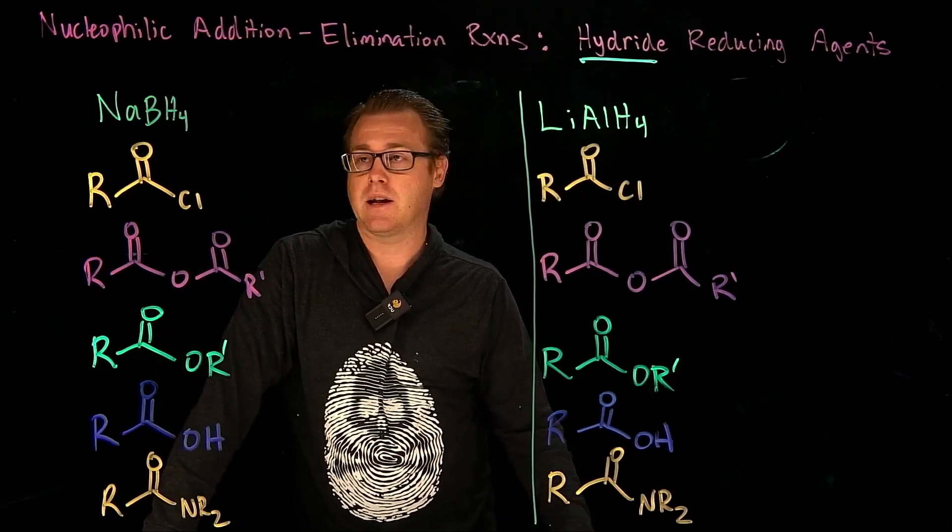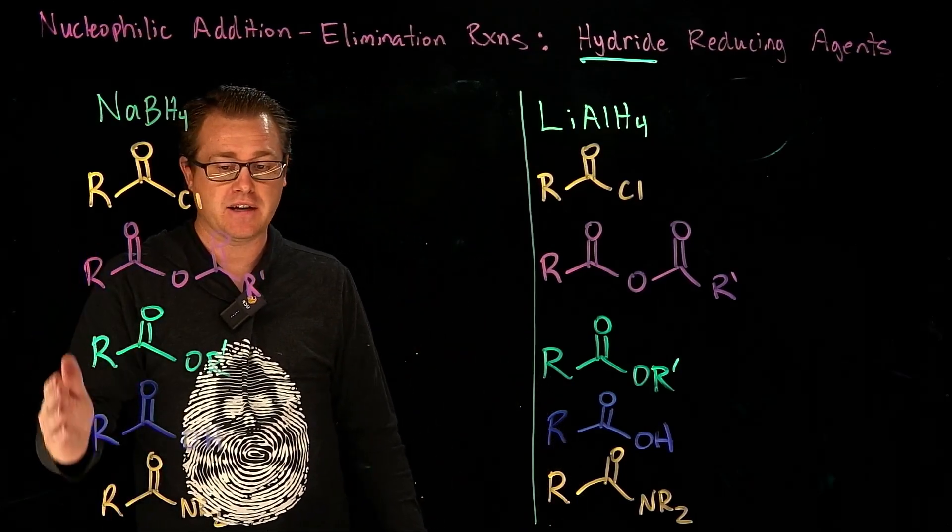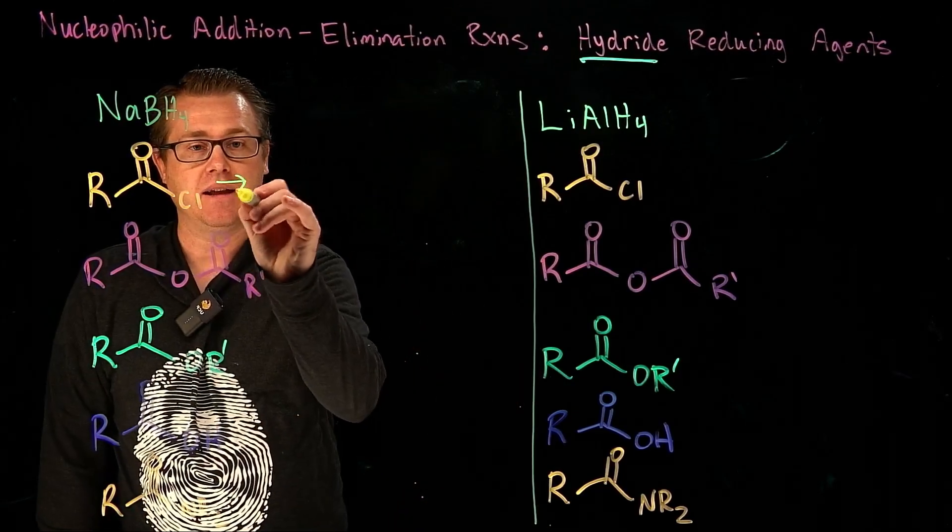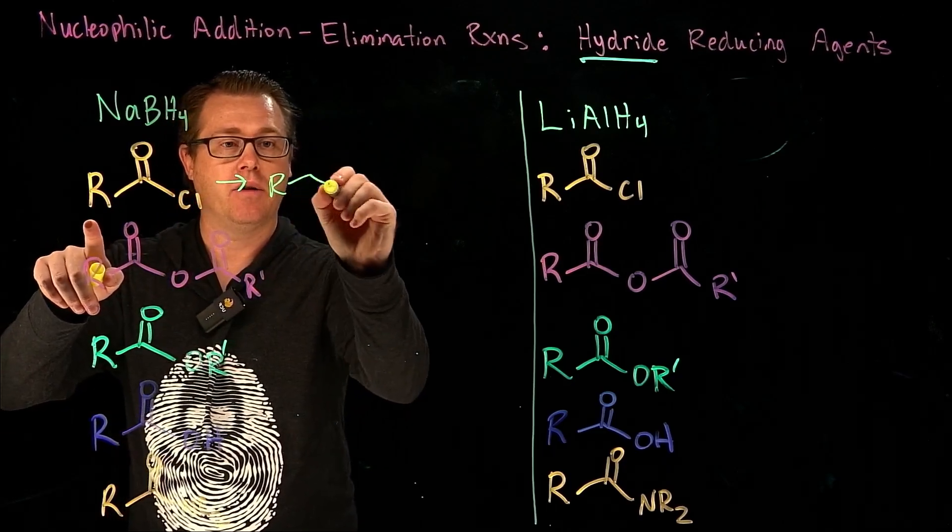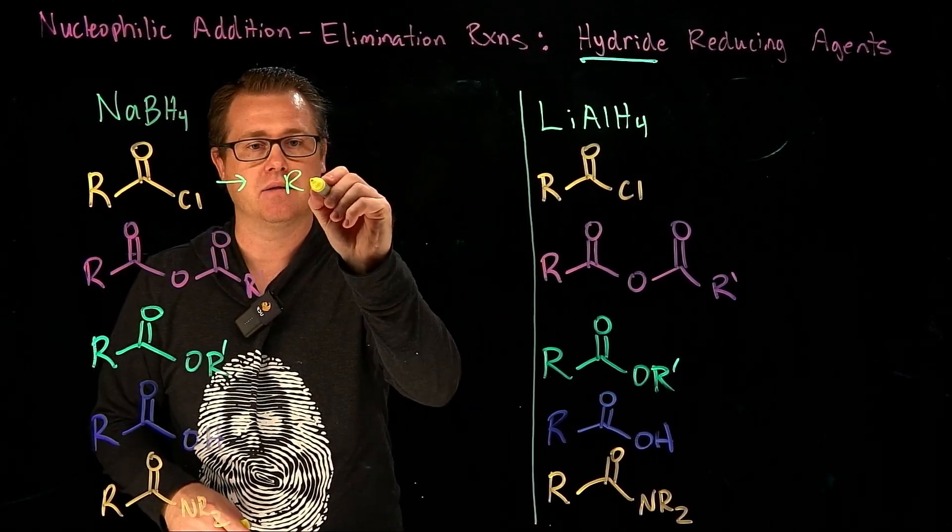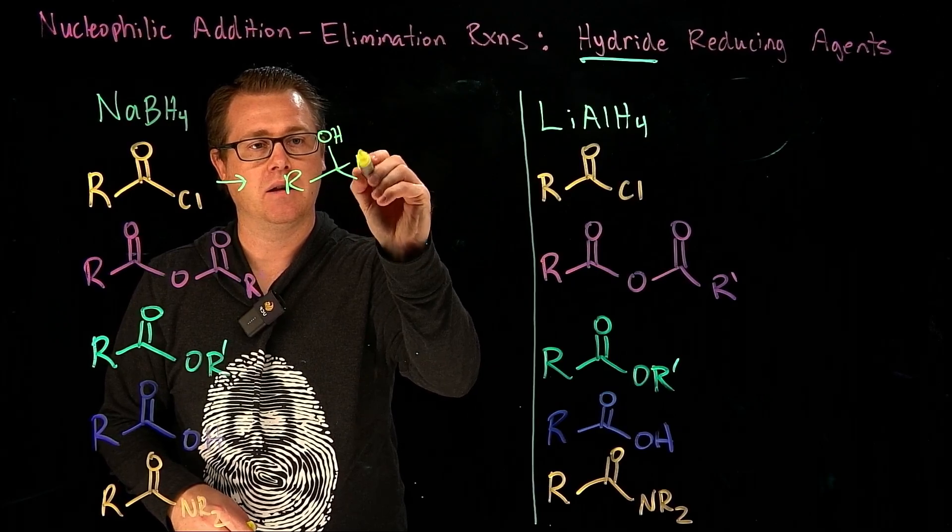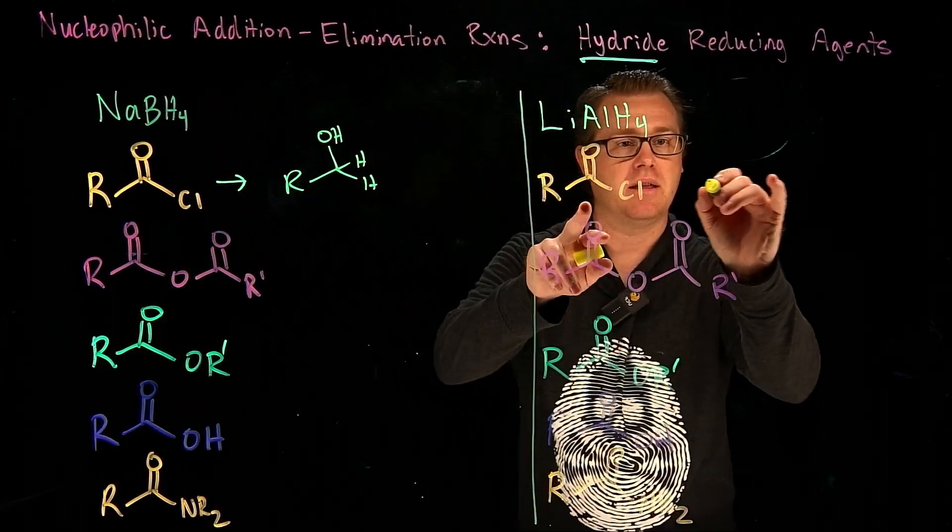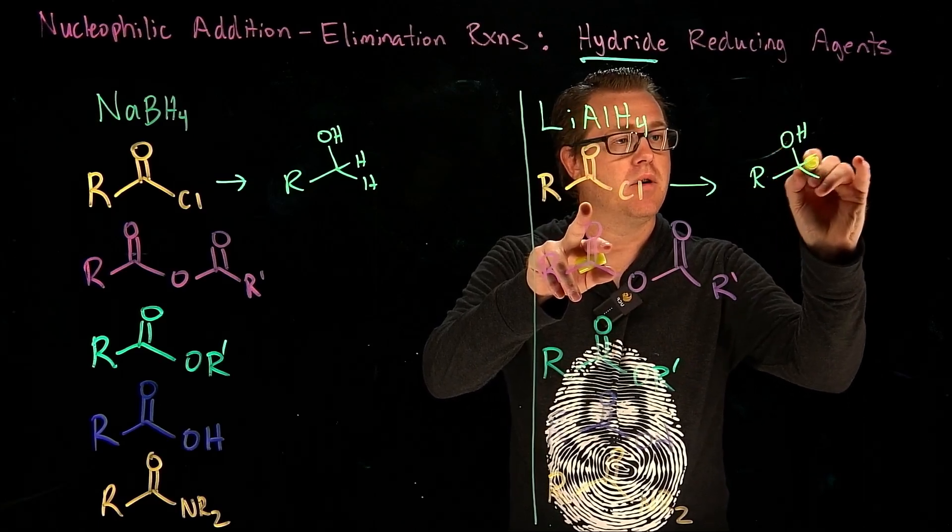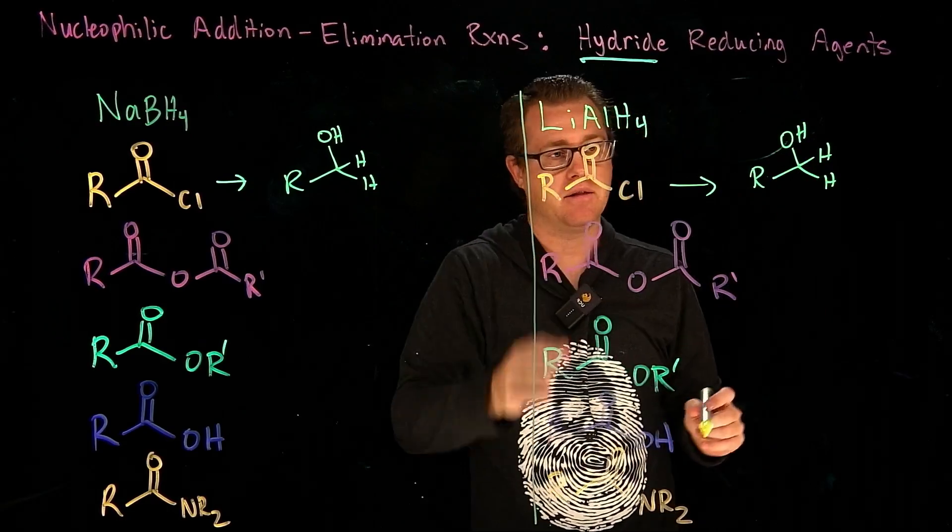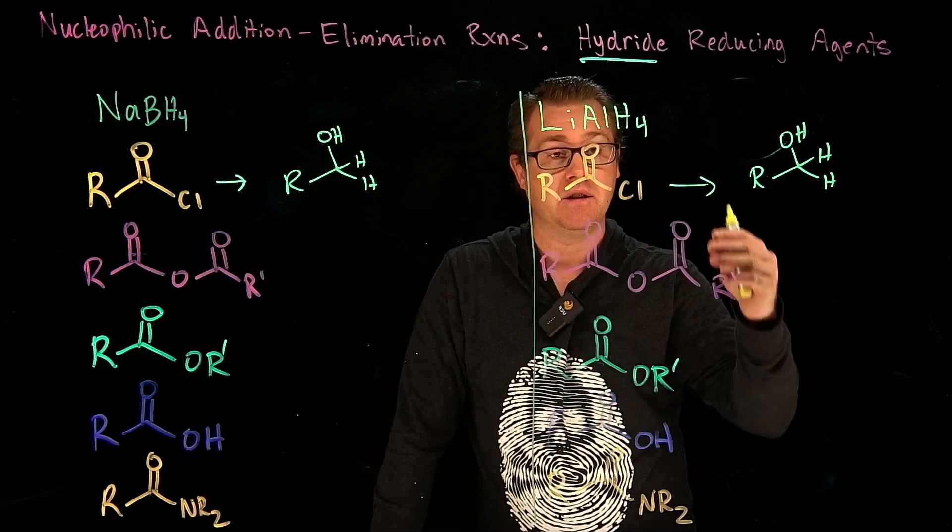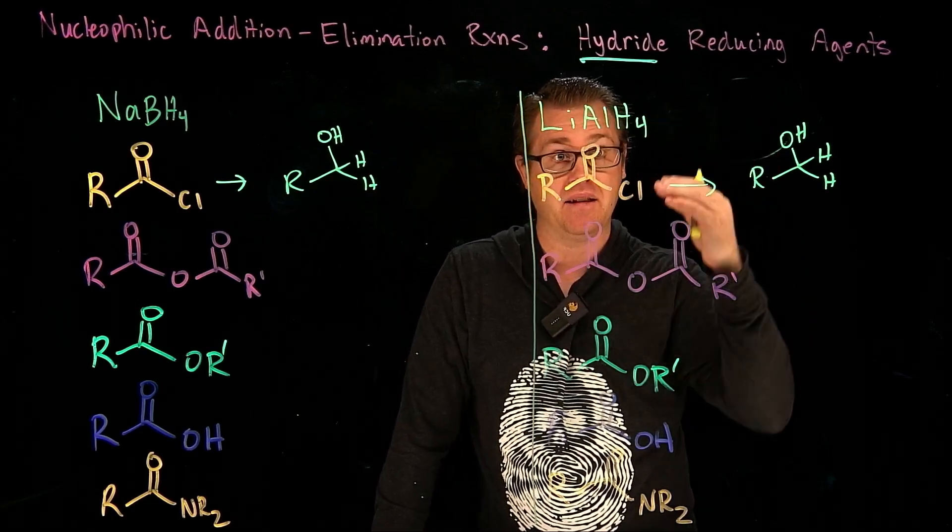So let's start taking a look at the different types of carboxylic acid derivatives. We've already seen that if we take an acid chloride with sodium borohydride, we are going to generate the primary alcohol. And we also saw that lithium aluminum hydride would give us the same product. But remember that the reaction conditions are slightly different. You have to do it in two steps - the lithium aluminum hydride and then an acidic workup.